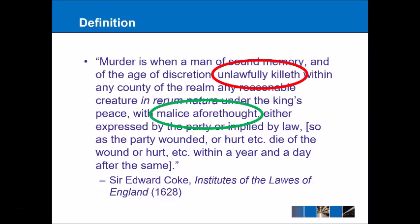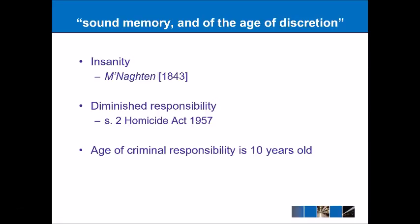The first part of this quote is 'a man of sound memory and of the age of discretion.' Sound memory doesn't mean that someone's good at remembering things — it's more that the person is of sound mind; in other words, they're not insane. We can look at the McNaughton rules from 1843 for that, and also that they don't suffer from diminished responsibility, which would make them guilty of manslaughter instead, as defined by Section 2 of the Homicide Act 1957.